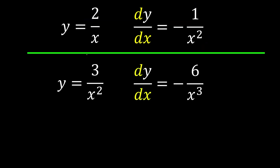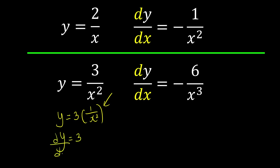How about 3 over x squared? It's basically the same thing. y equals 3 times 1 over x squared — take out the 3 first, then differentiate. Using the pattern: the power becomes the numerator, don't forget the negative, so negative 2 over x, and the power itself increases by 1. Multiplying by 3, we get negative 6 over x cubed.